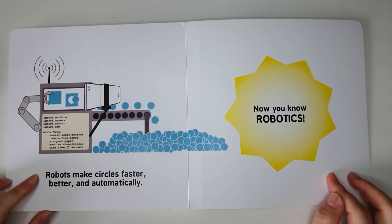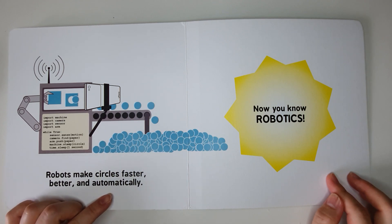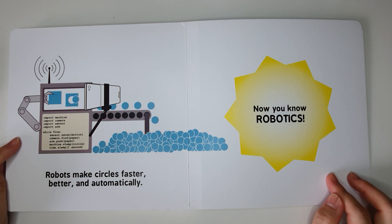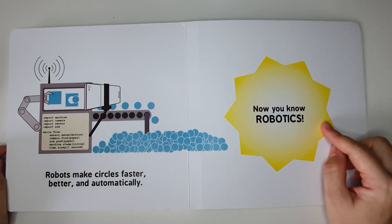Robots make circles faster, better, and automatically. Look at the numbers of circles that the robots can generate. Now, you know robotics. The end.